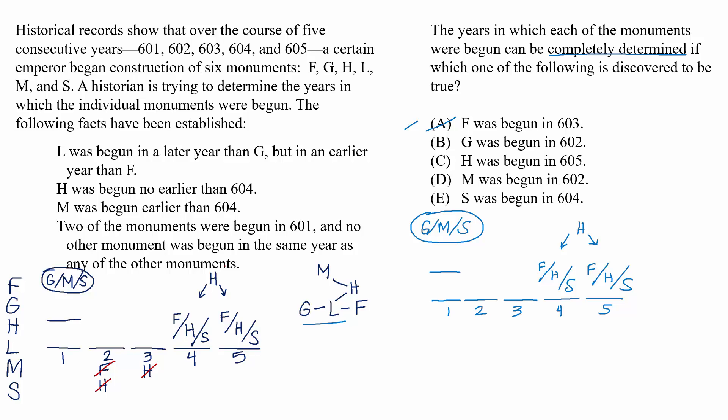B. What if G was begun in 602? Well, we would know that M and S are the monuments in 601 and then that L has to be in 603 since it can't be 4 or 5. But we don't know what order F and H are in, so almost not quite.